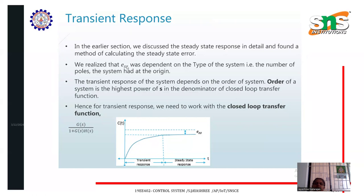Steady-state error is dependent on the type of the system — that is, the number of poles the system has at the origin. The transient response of the system depends on the order of the system. So steady-state response depends on the type of the system, and transient response depends on the order of the system.